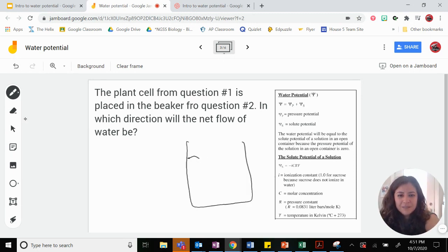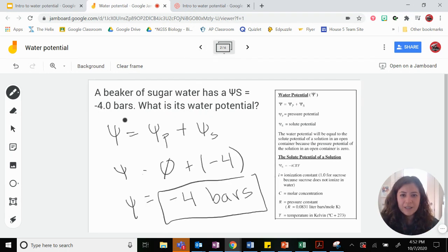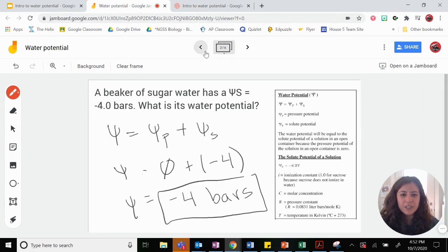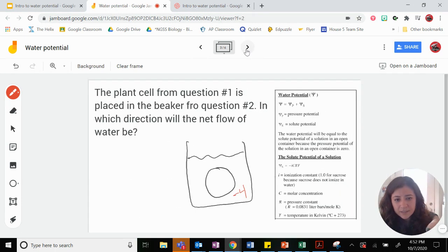So let's draw a little picture. Here's my beaker. Wonderful. And here's my cell. So going back, the water potential in the beaker was negative 4. So this was negative 4. And the water potential in the cell was negative 1.5.